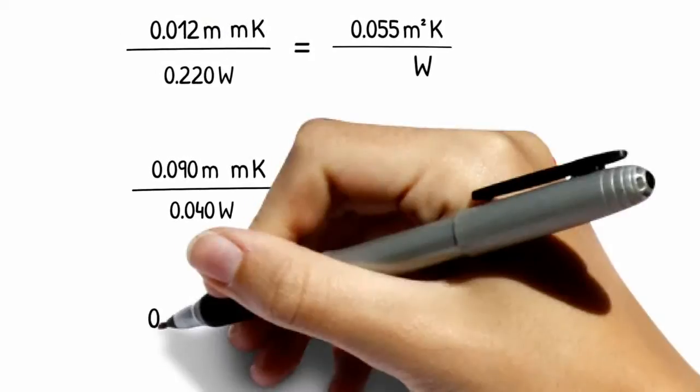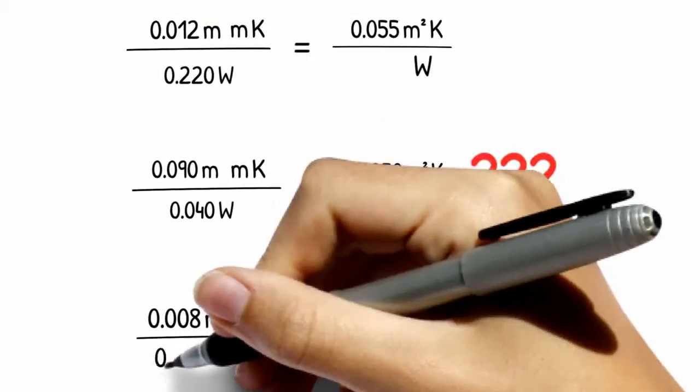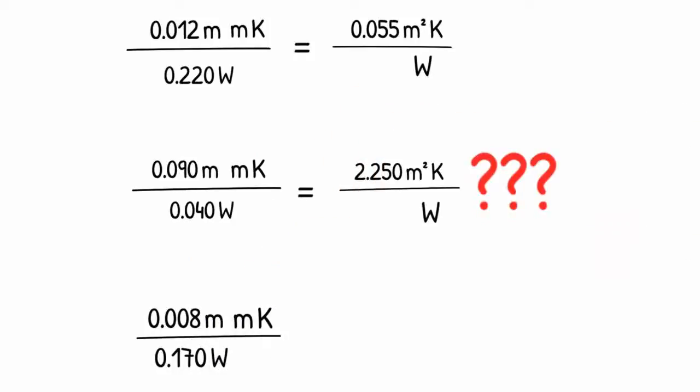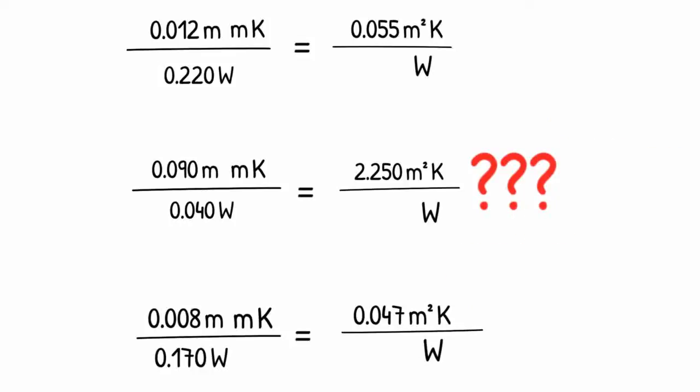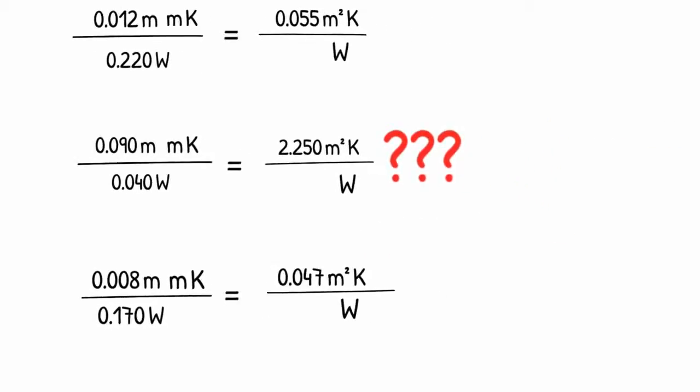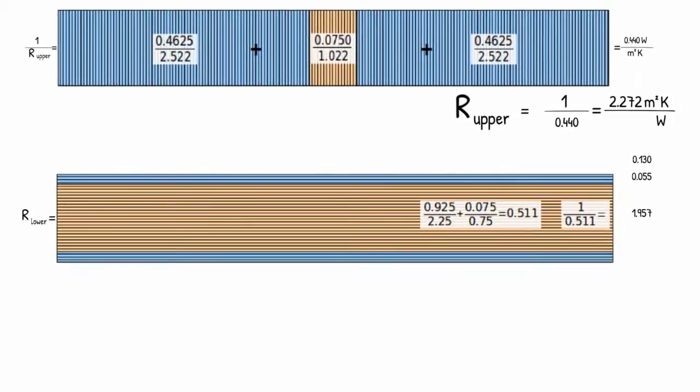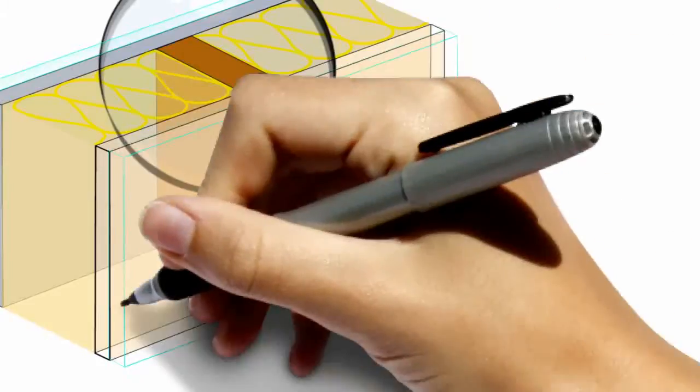We still need to calculate the resistance of the exterior plywood layer in the usual way by putting the layer thickness over thermal conductivity which gives us a resistance for this layer of 0.047 square meter times kelvin over watt and we need to transfer this to our summation here. Add exterior surface resistance which is lower due to it being windy on the outside.